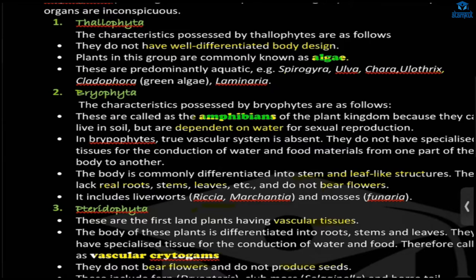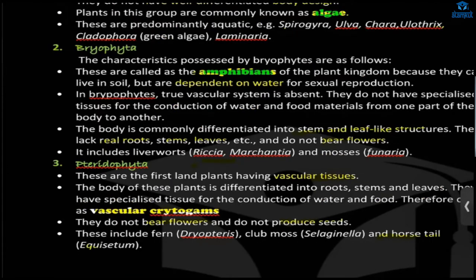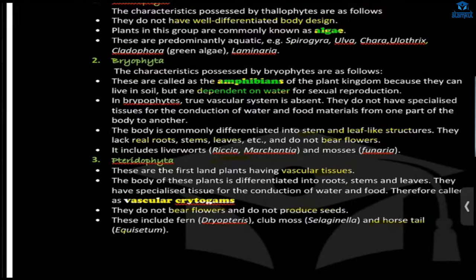Bryophyta is called the amphibians of the plant kingdom. It is called so because their reproductive cycle depends on water. Similar to the amphibians of the animal kingdom — organisms that live on both land and water — like frogs, which need water to reproduce but can breathe on land.